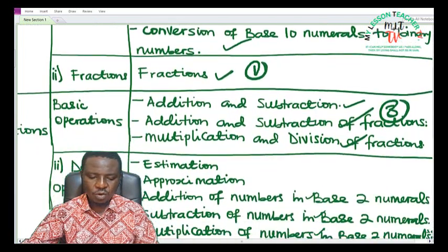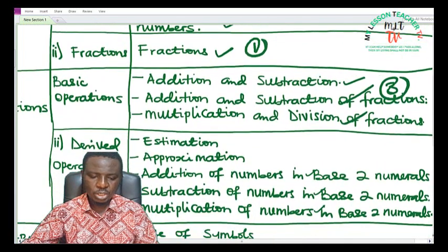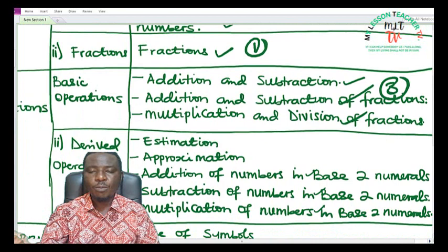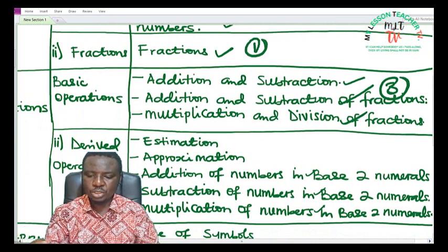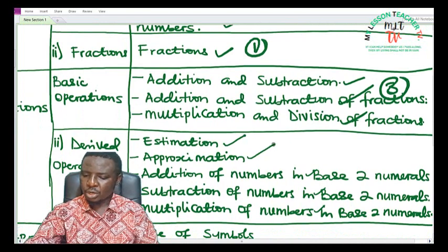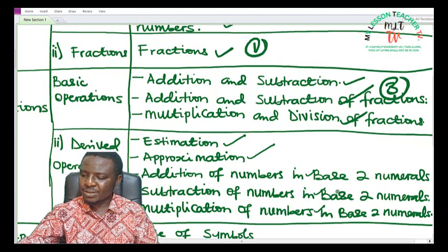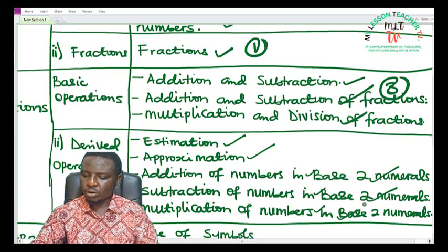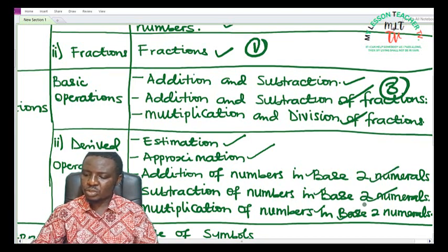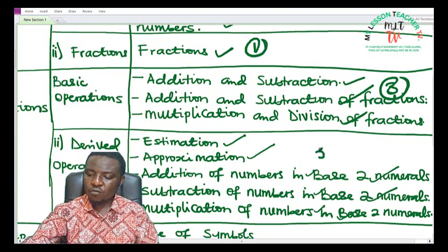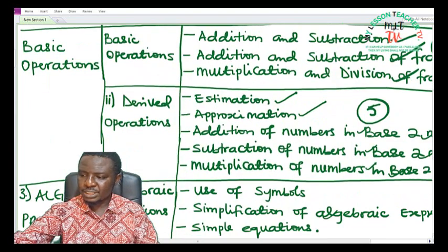Still under basic operations, we have the derived operations. Topics under derived operations include estimation, approximation, addition of numbers in base two numerals, subtraction of numbers in base two numerals, as well as multiplication of numbers in base two numerals, making it a total of five topics.